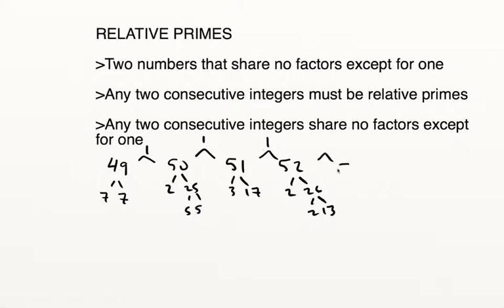And 53, of course, is prime. So that is going to share no factors with 52. So again, a gap of 1.